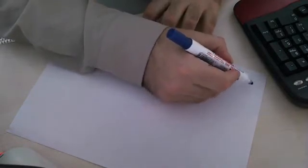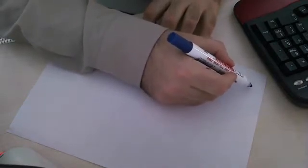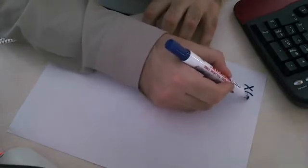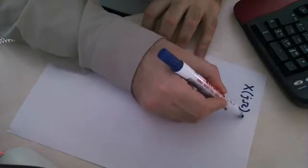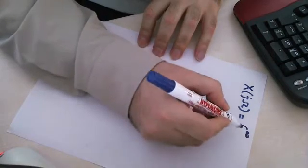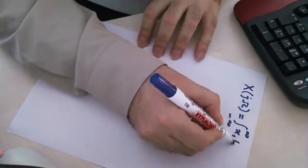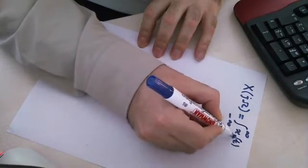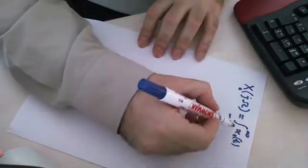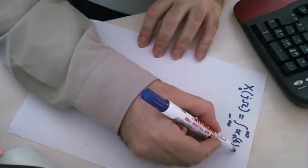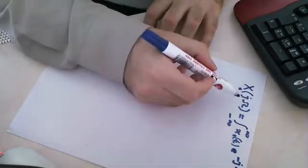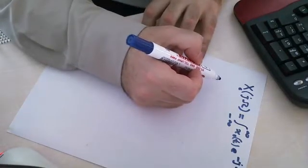Now, let's first start with the Fourier transform of a signal. X of j omega is the Fourier transform of a signal XCT. Integral from minus infinity to plus infinity, XCT, subscript C indicates that it's a continuous time signal, E to the minus j omega T DT. The actual angular frequency is omega.